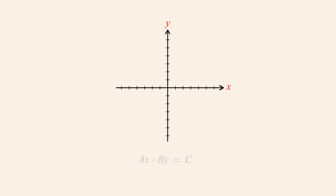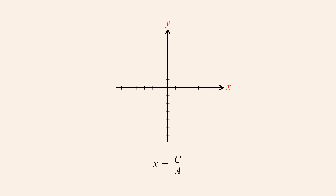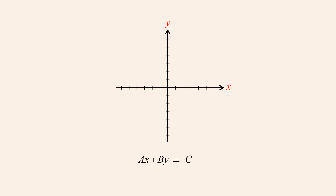On the other hand, if instead of a being zero, b is zero, then the y-term vanishes and we have an equation with only the variable x. Dividing both sides by a, we see that x is equal to the constant expression c over a. Since y can have any value while x always has the constant value c over a, this equation describes a vertical line with x-intercept c over a, zero. So when a or b is zero, the graph is either a horizontal line or a vertical line.